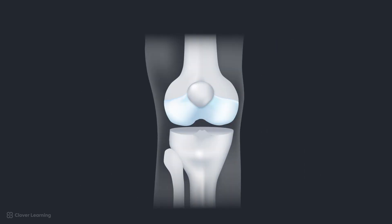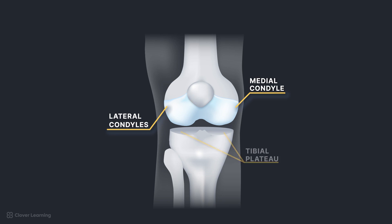The proximal end of the tibia has two prominent processes, the medial and lateral condyles. The superior surfaces of the condyles, called tibial plateaus, articulate with the condyles of the femur. Between the plateaus is a sharp projection called the intercondylar eminence or tibial spine, which has two peak-like processes called the medial and lateral intercondylar tubercles.